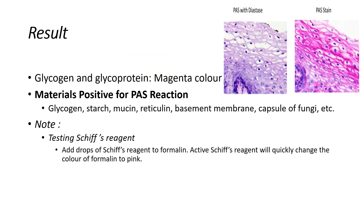Results: Glycogen and glycoproteins give a magenta color. Some other materials also give a positive reaction for PAS — these are starch, mucin, reticulin, basement membrane, and the capsule of fungi. To check the Schiff solution, add a drop of Schiff solution to formalin.